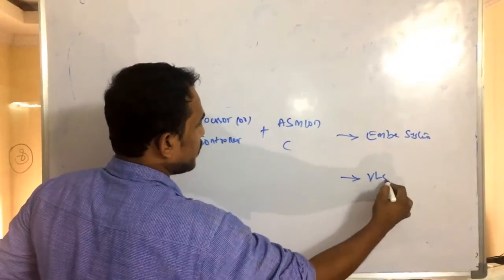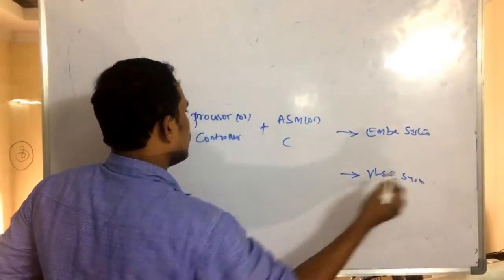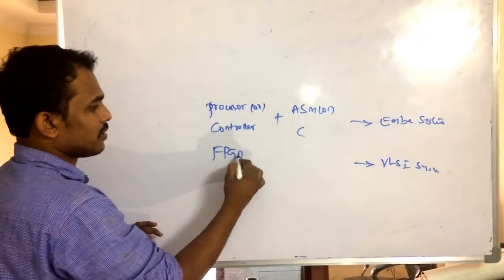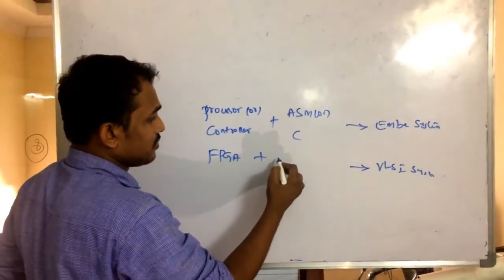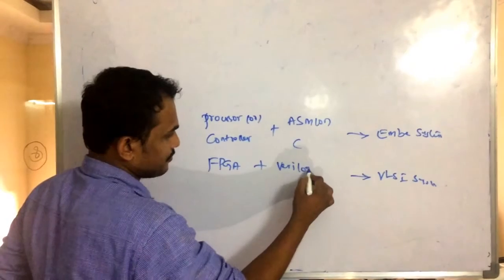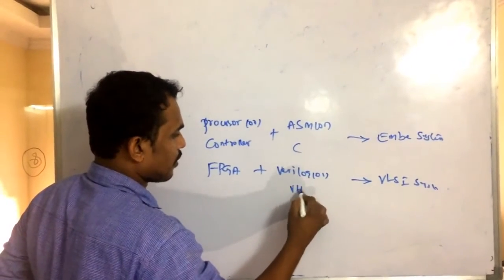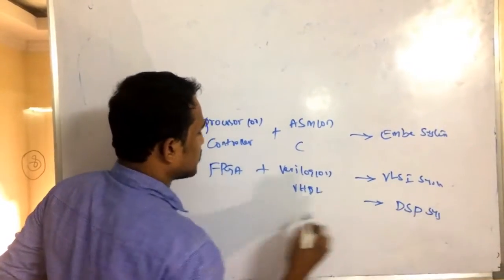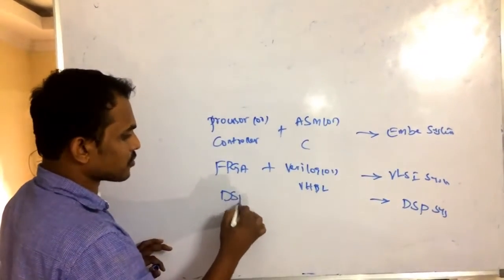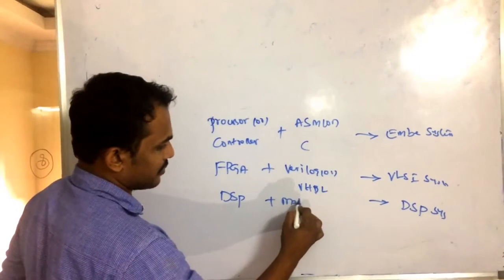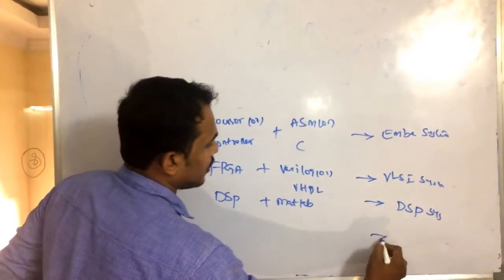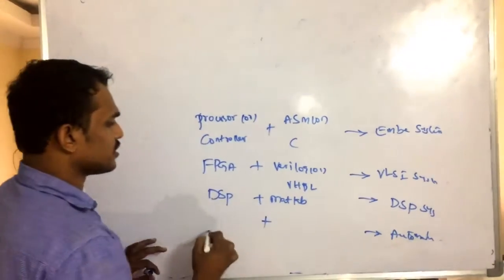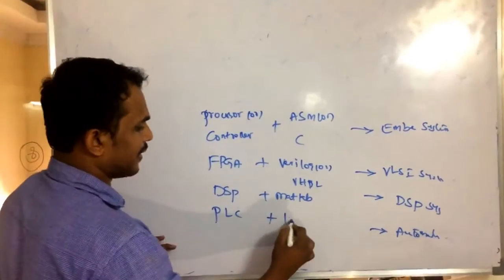What about VLSI system? It's a combination of FPGA device and the language is Verilog or VHDL. Coming to DSP system, this is a combination of digital signal processor and MATLAB language. And what about automation system, which is a combination of PLC and ladder logics.